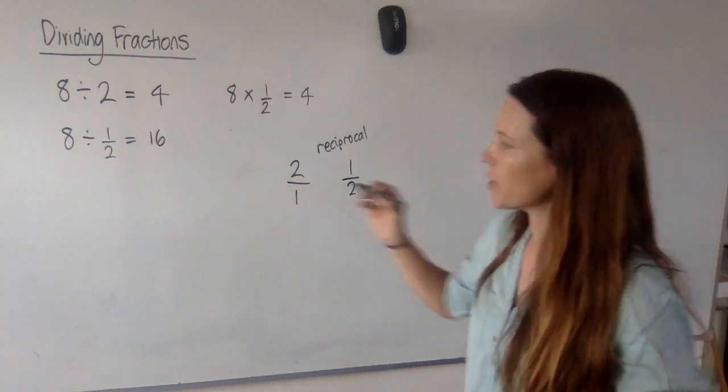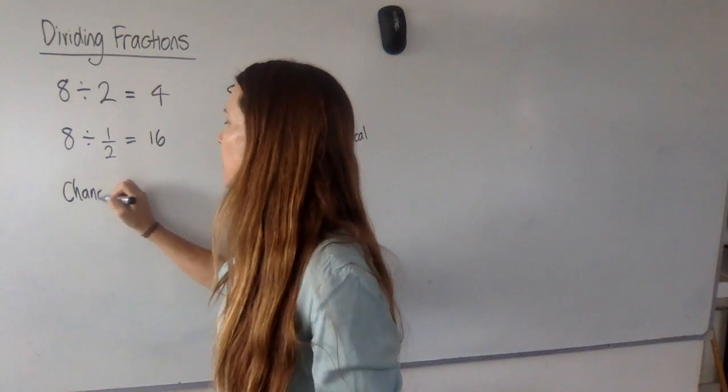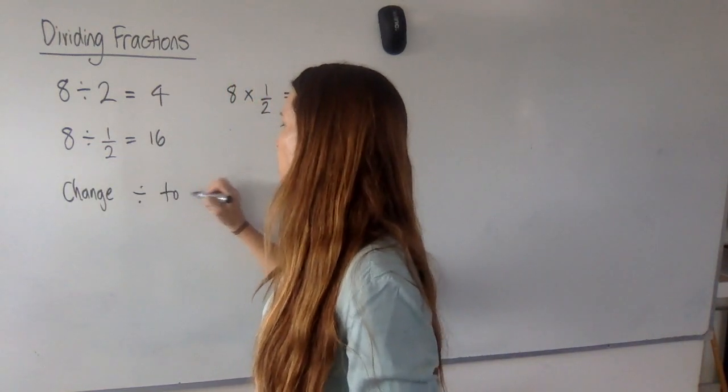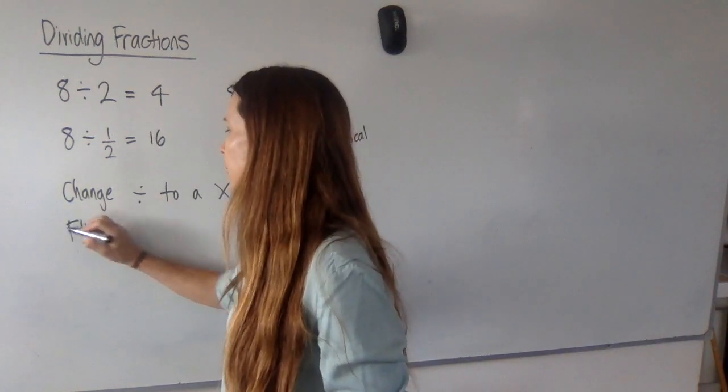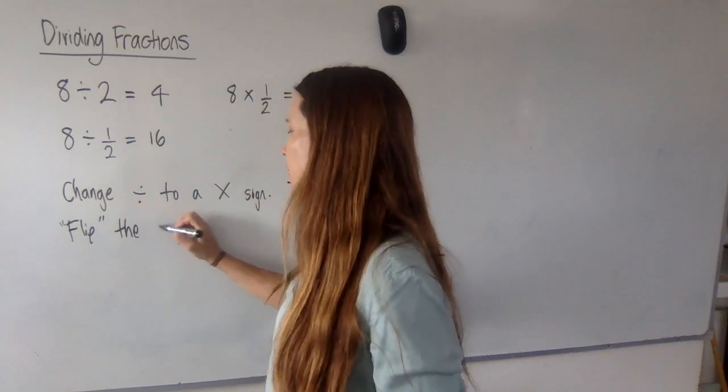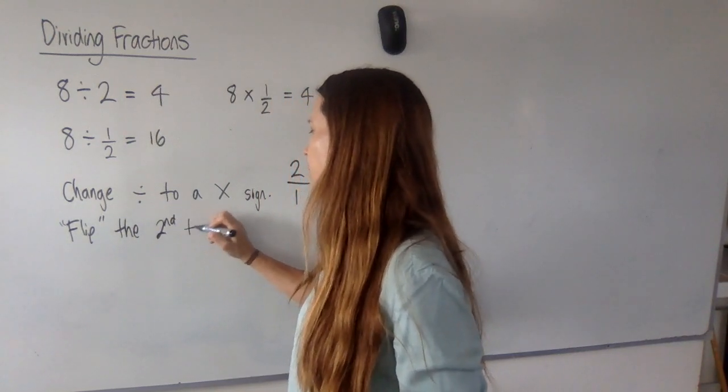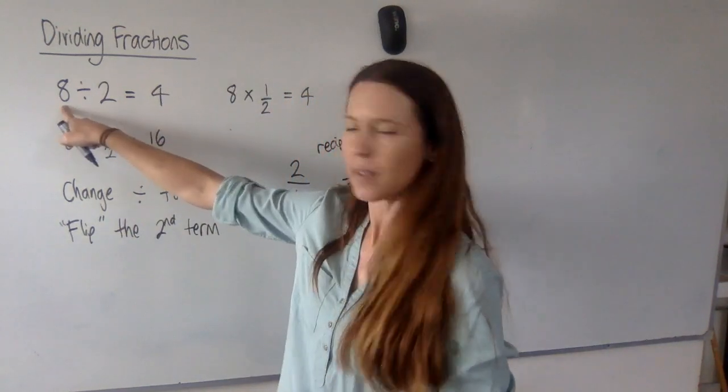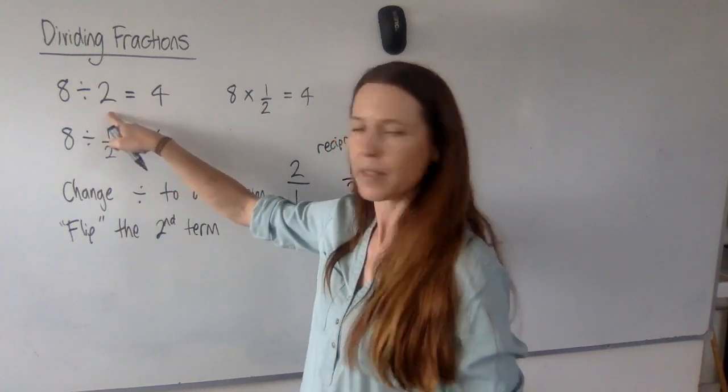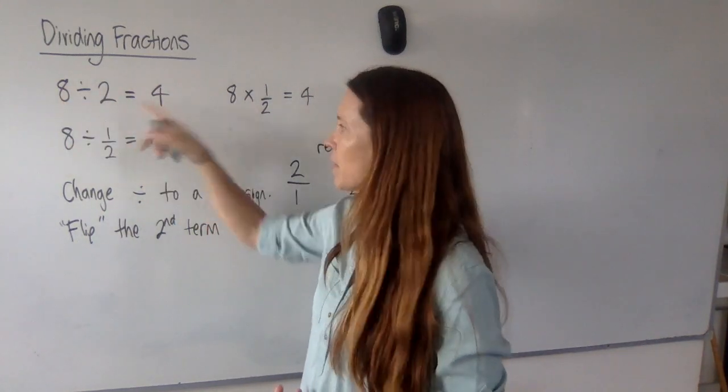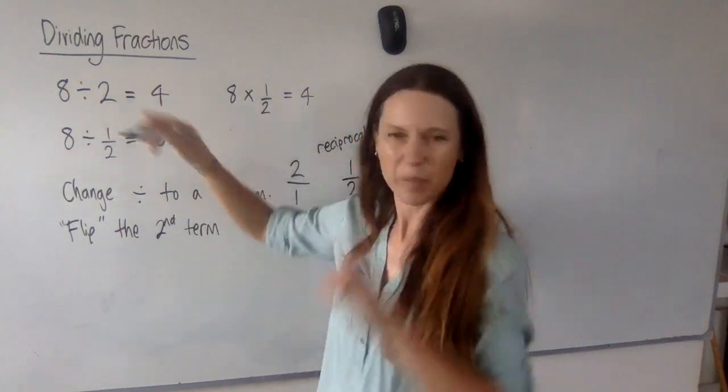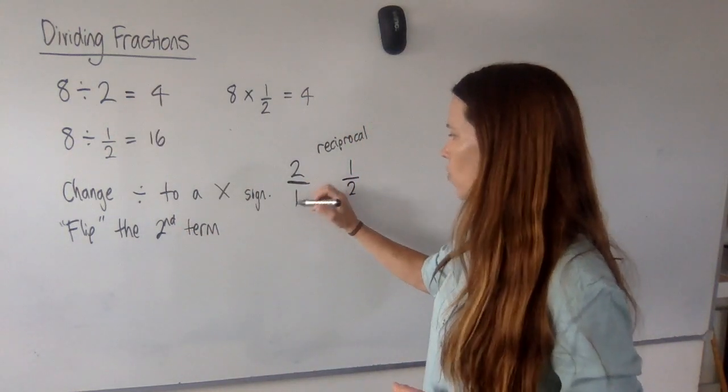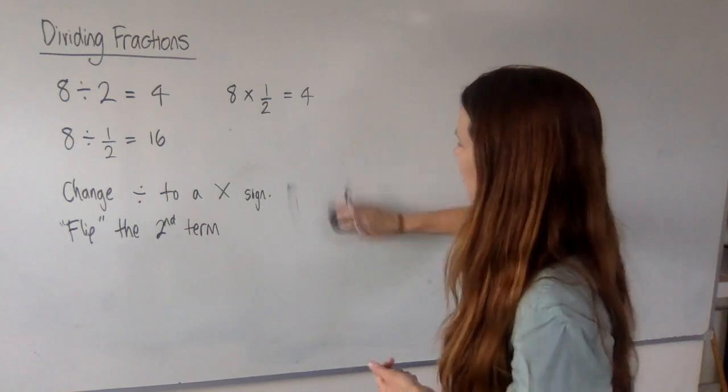So, what we need to do is change the division to a multiplication sign and then flip the second term. Now, what do I mean by the second term? Is this the second term? No, that's the first term. This is the second term in our number sentence. We flip it. Now, if there's nothing on the bottom to flip, then we can give it a 1. Okay. So, we flipped it.